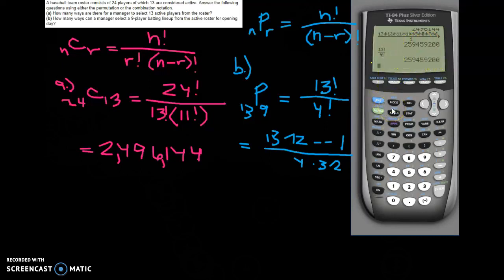So it looks like when order does matter, 259,459,200. There are 259,459,200 different ways to pick 9 people out of 13.